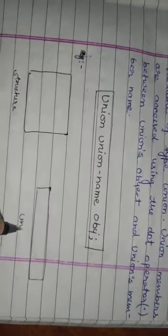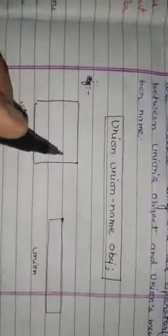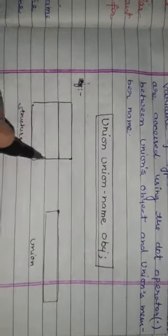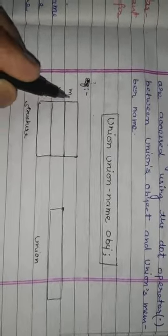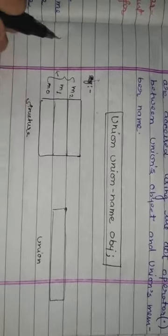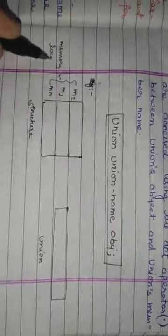This is a structure, and this is a union. In the structure, there are three separate memory locations — M0, M1, and M2. In the union, there is a single memory location M0 shared by all members.